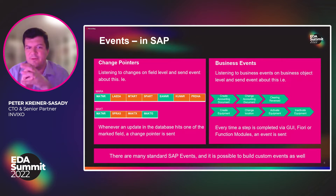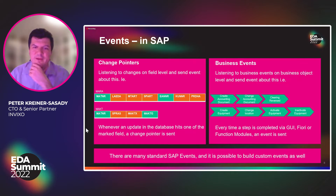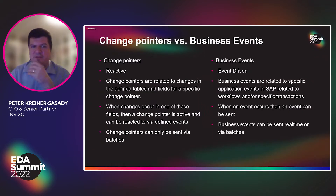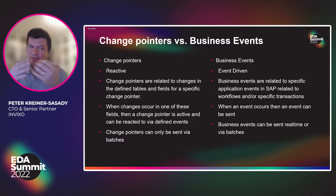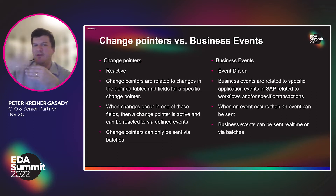There are so many SAP events and you should be able to leverage these. To put it another way, change pointers are reactive — we react to changes in the database — whilst business events are more event-driven, where we look at when an event occurs and then act on it.